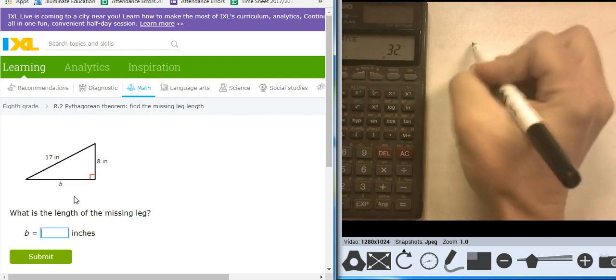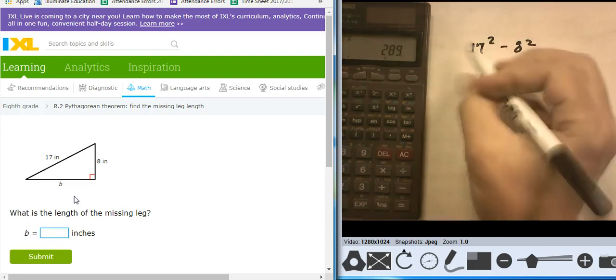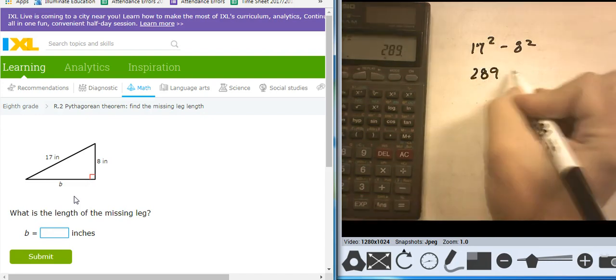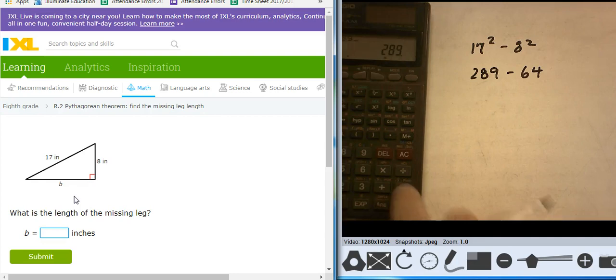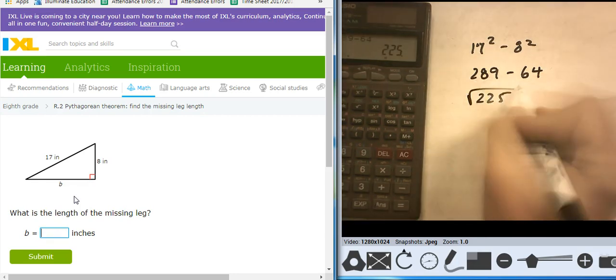17 squared minus 8 squared. 17 squared is 289, I should have that memorized, minus 64, takes me to 225. Square root of 225 is 15.